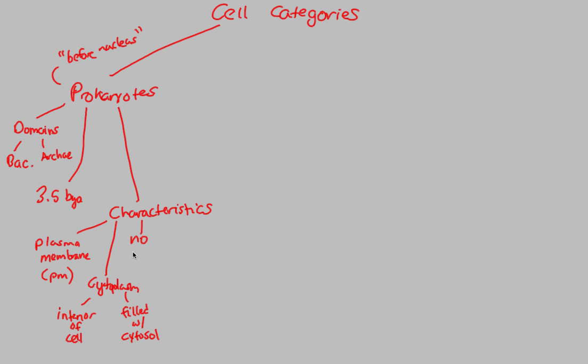One other characteristic is that these have no nucleus. Prokaryotes have no nucleus. Notice the name now: before nucleus. These arose and developed before an actual nucleus was part of cell structure. They also have no membrane-bound organelles. These are the two no's you have to know. You have to understand that prokaryotes are prokaryotes mainly because they have no nucleus and no membrane-bound organelles.